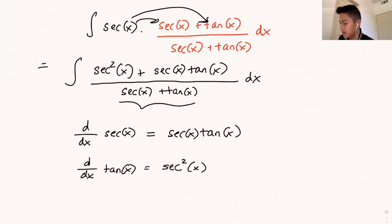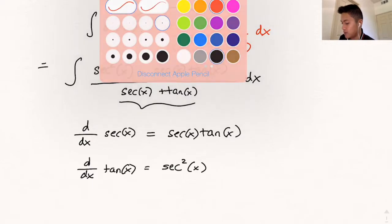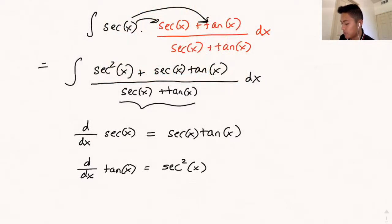And notice in the numerator, the derivative of secant of x, remember, is secant times tangent. The derivative is right there of that function. And the derivative of tangent is secant squared. So notice that the numerator is simply the derivative of the denominator.